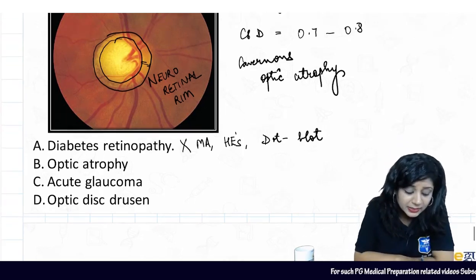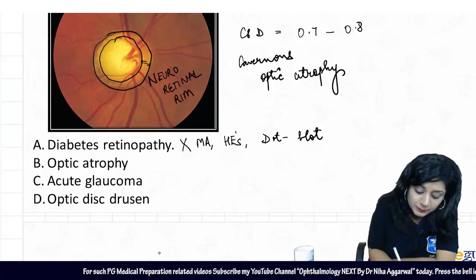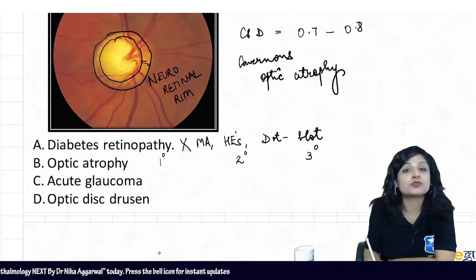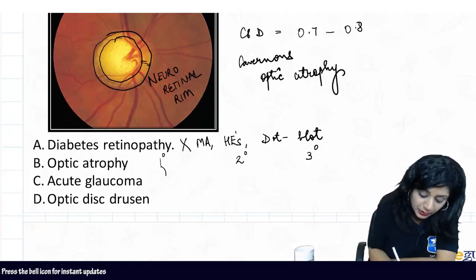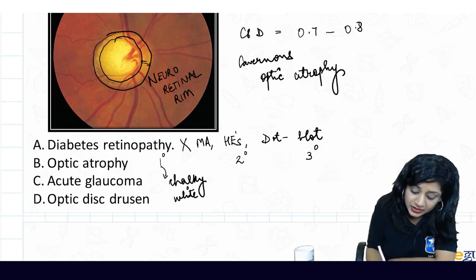Then the second option is optic atrophy. So if I have optic atrophy, it could be a primary optic atrophy, it could be a secondary optic atrophy, or it could be a tertiary optic atrophy. What are the colors? In the primary optic atrophy, I will have the chalky white color. In the secondary, it is the dirty white color.